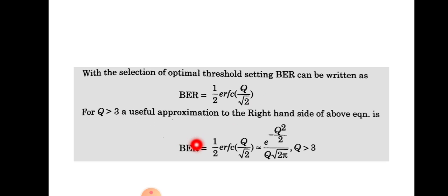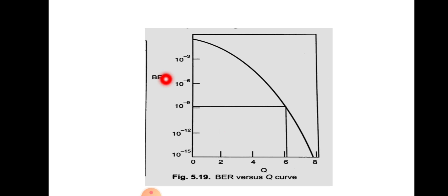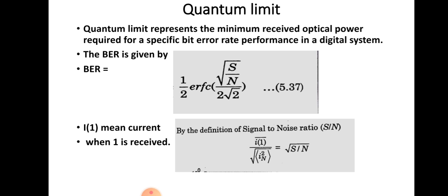When Q > 3, the bit error rate can be approximately written as e^(−Q²/2) / (Q√(2π)). We can draw a curve between bit error rate and Q factor. When BER is plotted against Q factor, we get a specific curve. Bit error rate gives a measure of the sensitivity of the system. Next, we go to quantum limit, which represents the minimum received optical power required for a specific bit error rate performance in a digital system.